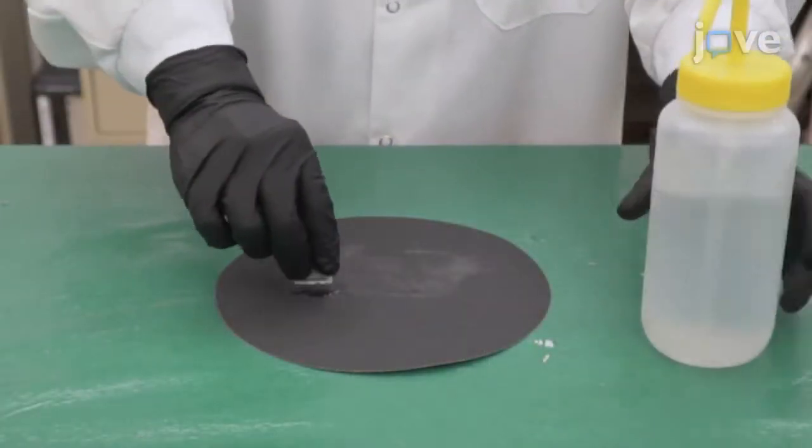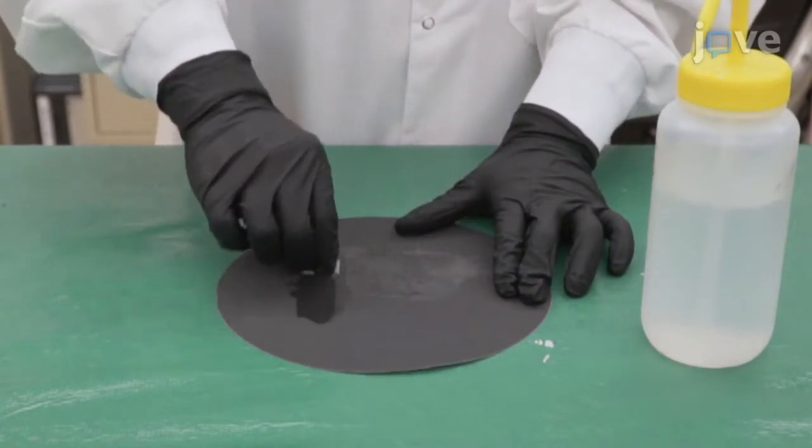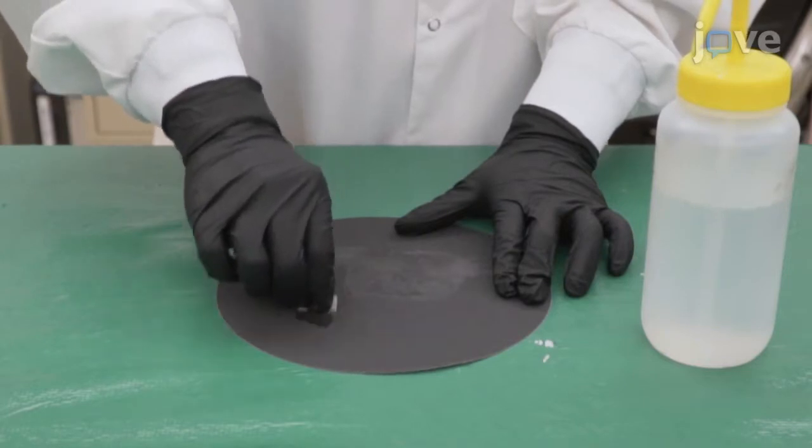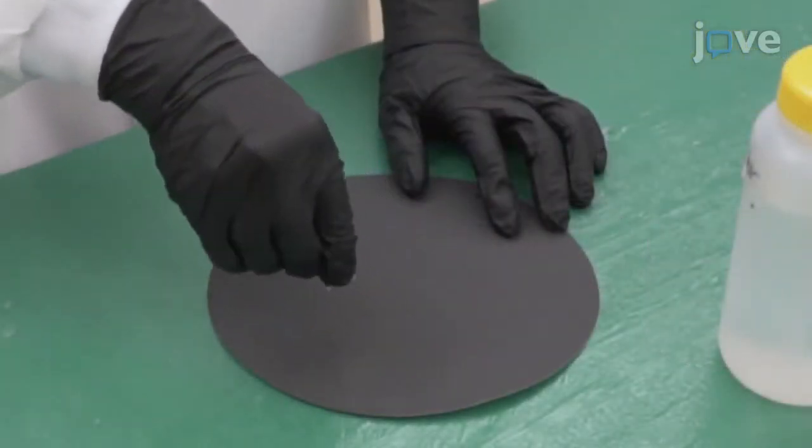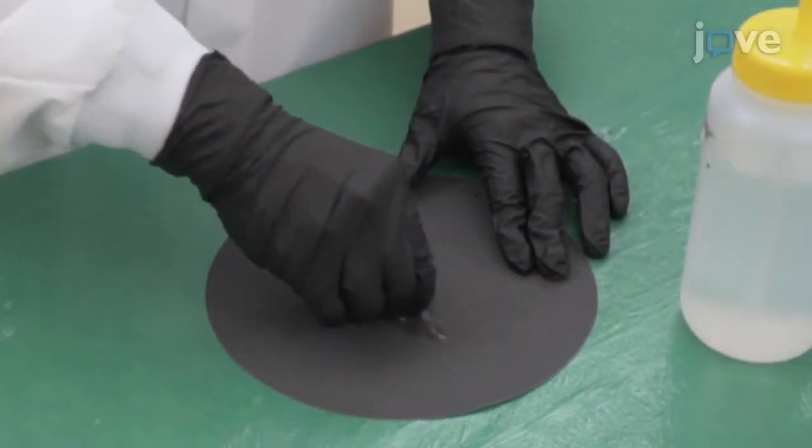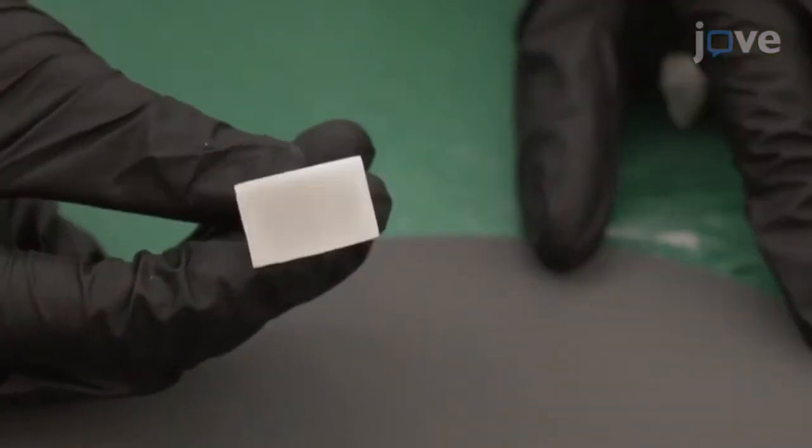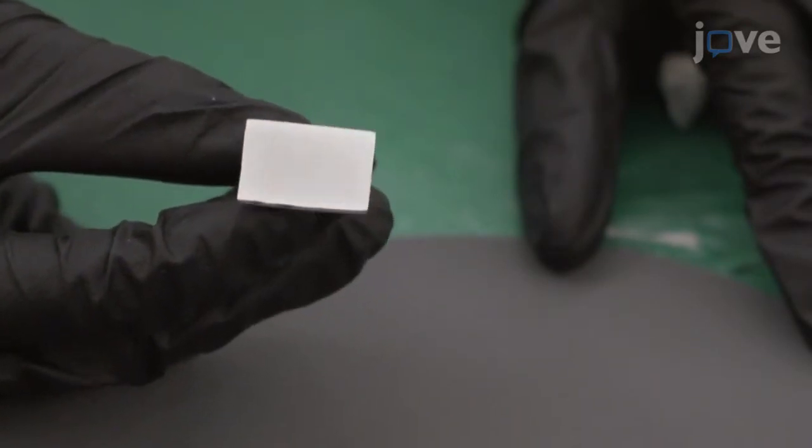Using 180 grit sandpaper, mechanically grind one side of each sample for 30 seconds along one arbitrary direction. Rotate the sample 90 degrees and grind the alloy with 240 grit sandpaper until the scratch lines from the previous step are completely removed, as confirmed by optical microscopy.